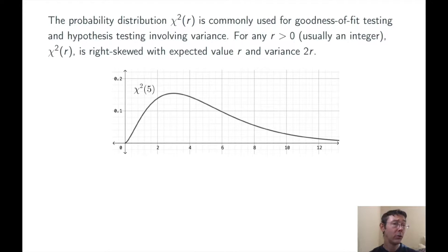Chi-squared is a continuous random variable, it's skewed to the right, its expected value is R, and its variance is 2R. In most applications, R is going to be a positive integer, but it does not necessarily have to be an integer at all.